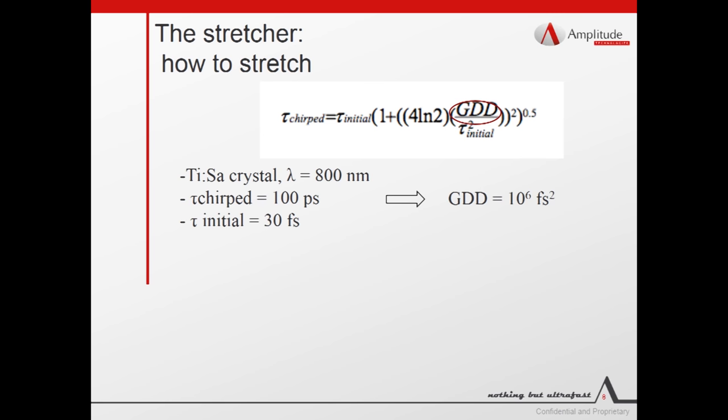After having estimated the chirp pulse width, now we examine different possibilities to stretch the pulse. Let's first point out what it means. To stretch the pulse, we need to introduce purposely a delay between the spectral components of the pulse. This parameter is identified by group delay dispersion. Considering only the second order approximation, the chirp pulse duration is related to initial pulse duration by the equations shown, valid for a Gaussian pulse. Since we know the initial pulse duration, and we already estimated the chirp pulse duration, we can obtain the group delay dispersion.